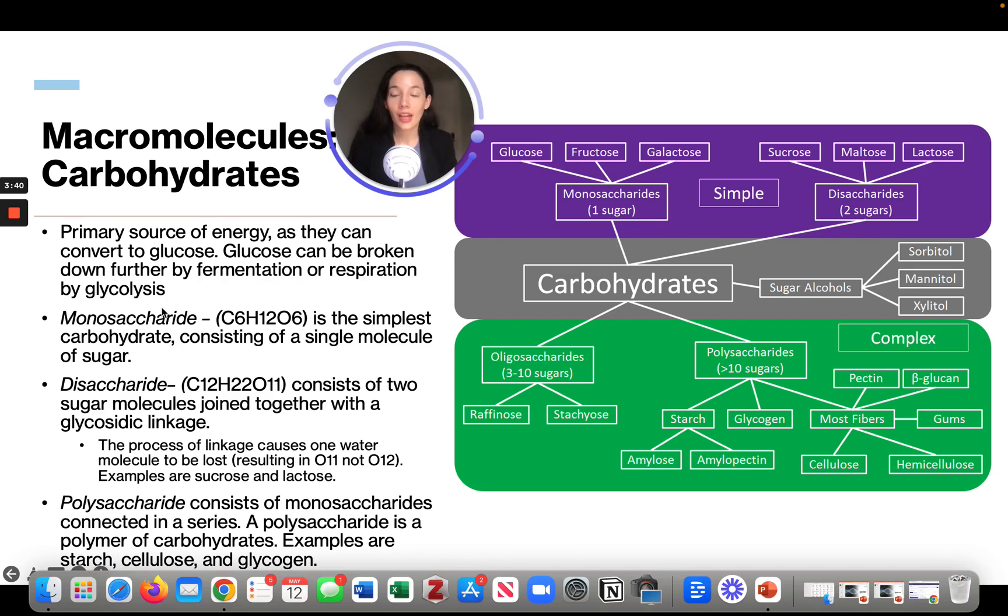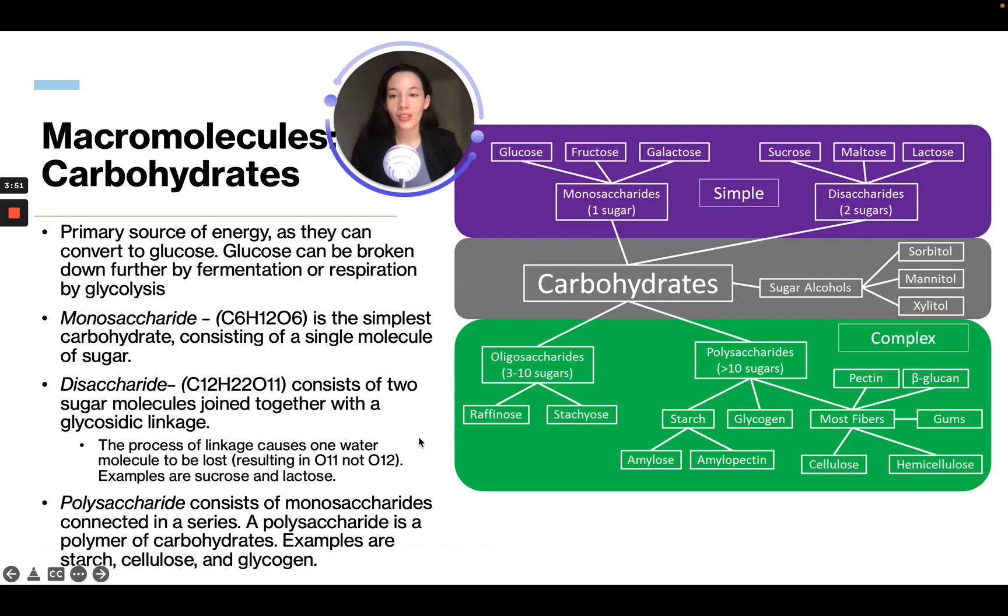Then there are disaccharides, which consist of two sugar molecules joining together with a glycosidic linkage. The process of linkage causes one water molecule to be lost. That's why it is O11 instead of O12. If you doubled this, if you think there's two of them, these numbers would be double, but it loses a water molecule.